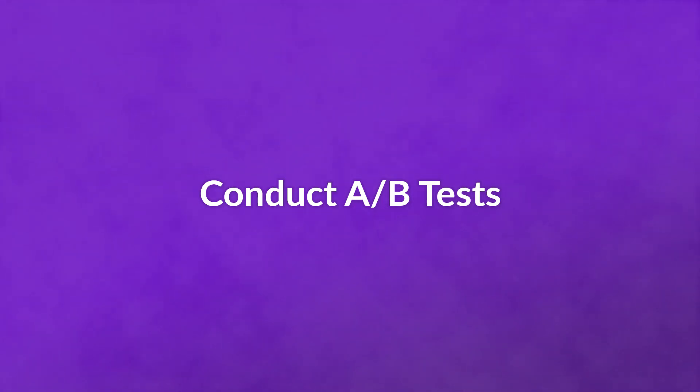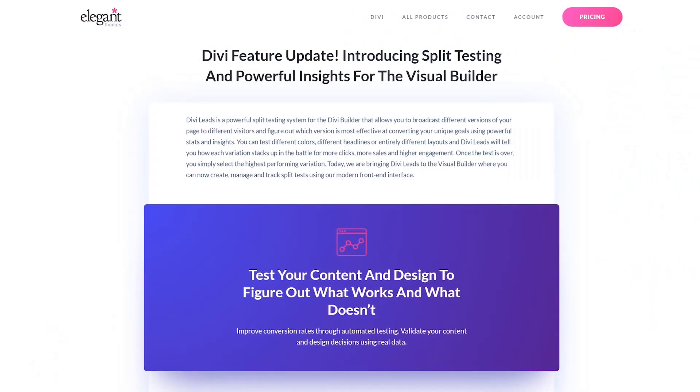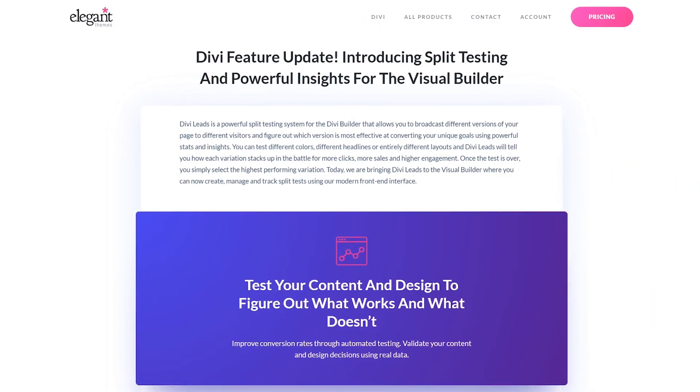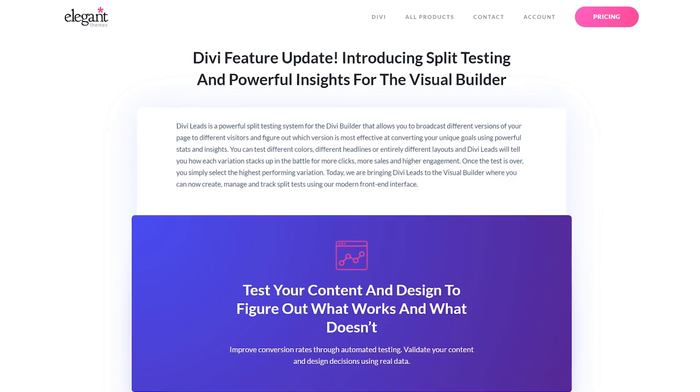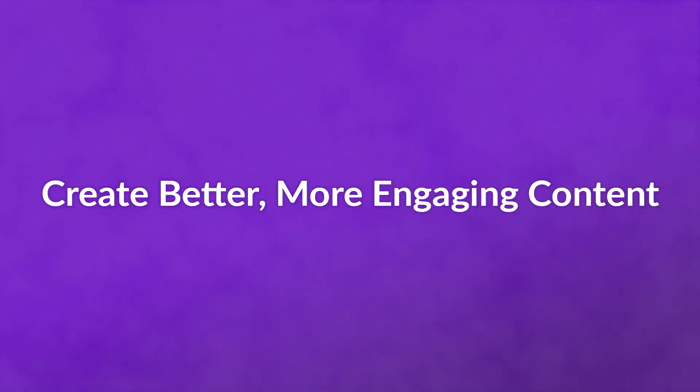Conduct A/B tests — create two versions of your layout and serve them to different audiences to determine which drives engagement and conversion. You have a number of options, and Divi users have even more, with A/B testing for layouts built right into the builder.